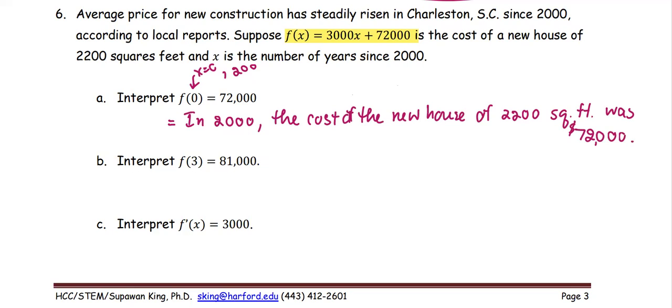In part (b), similar to part (a), this time x = 3. x = 3 means 3 years since 2000. So we can say that in the year 2003, the cost of the new house of 2200 square feet was $81,000.